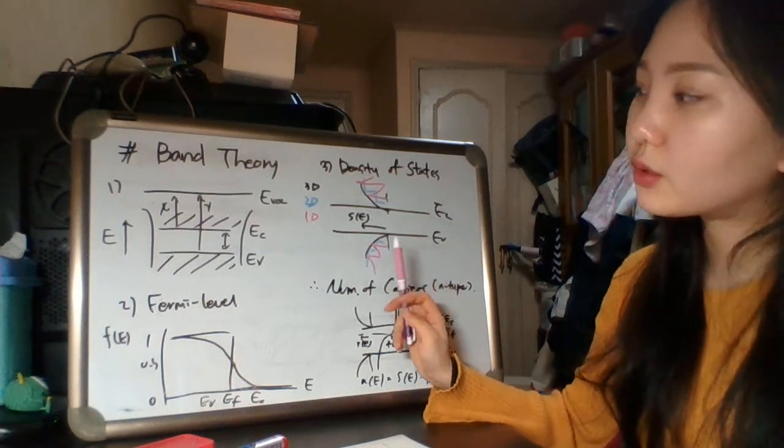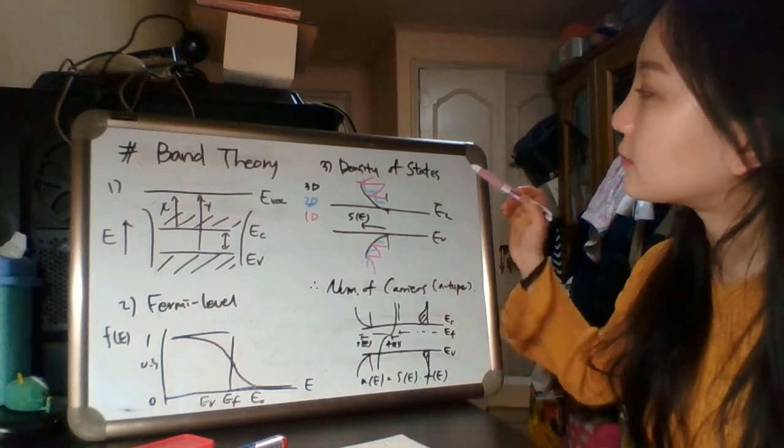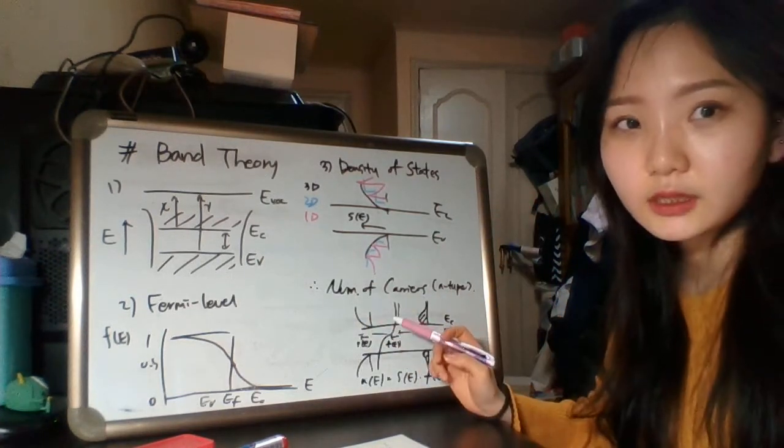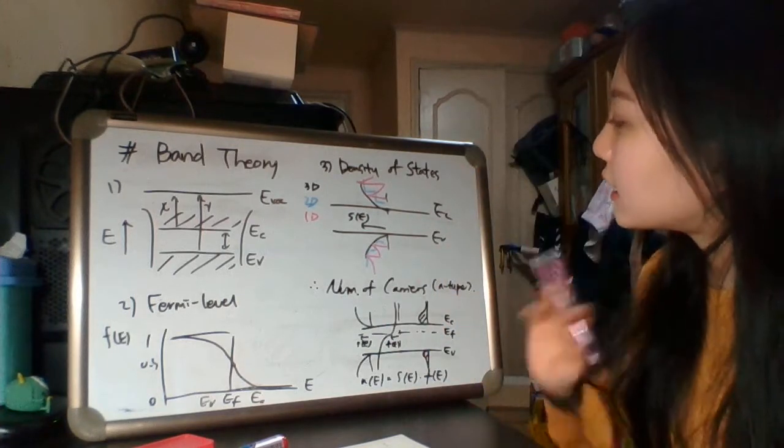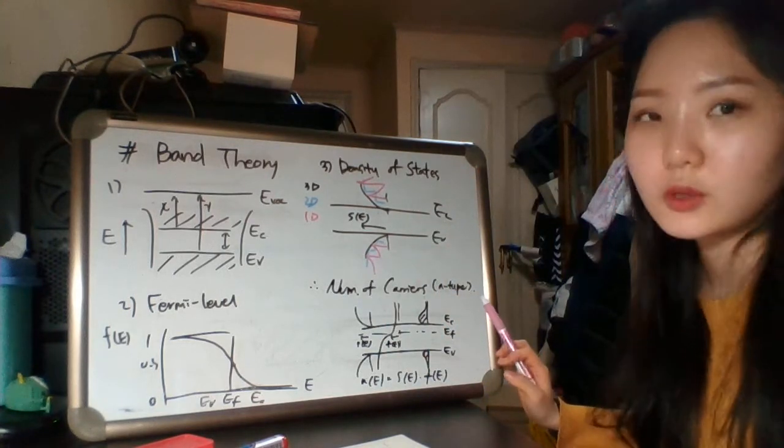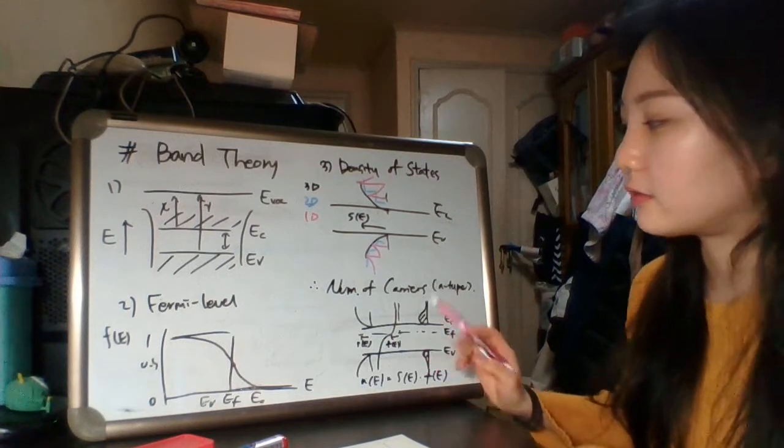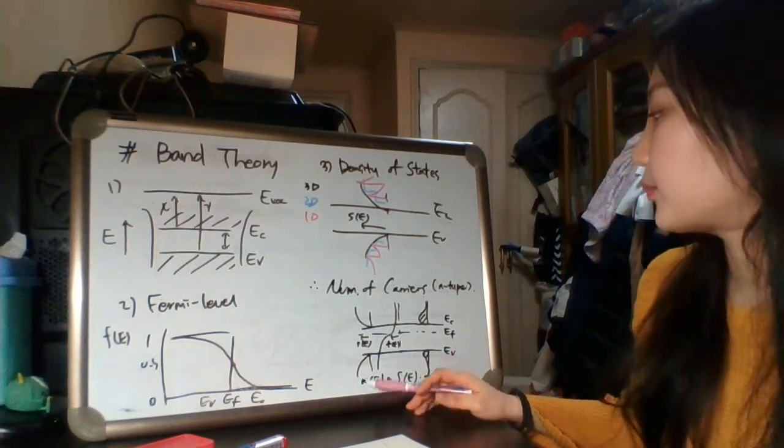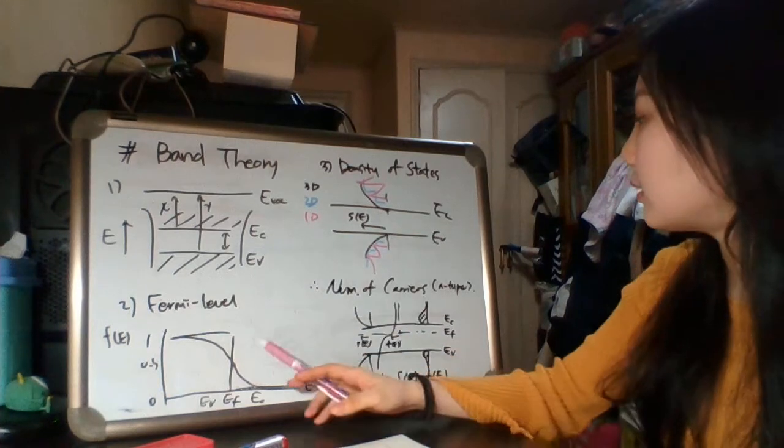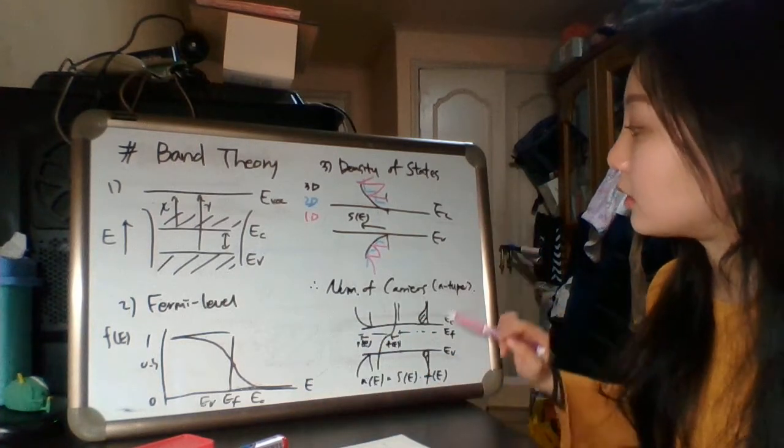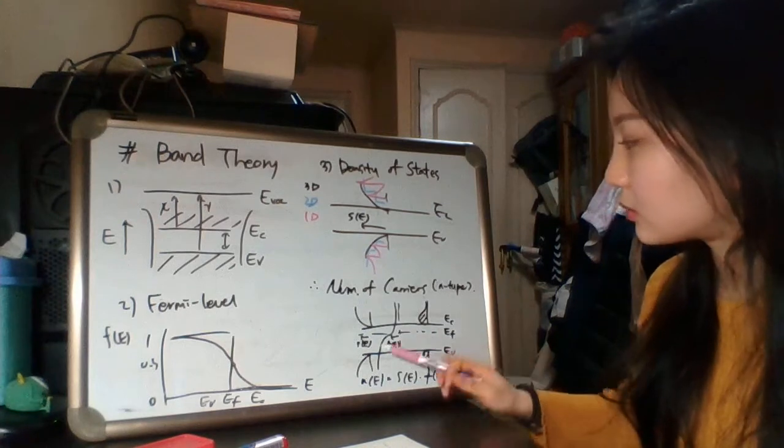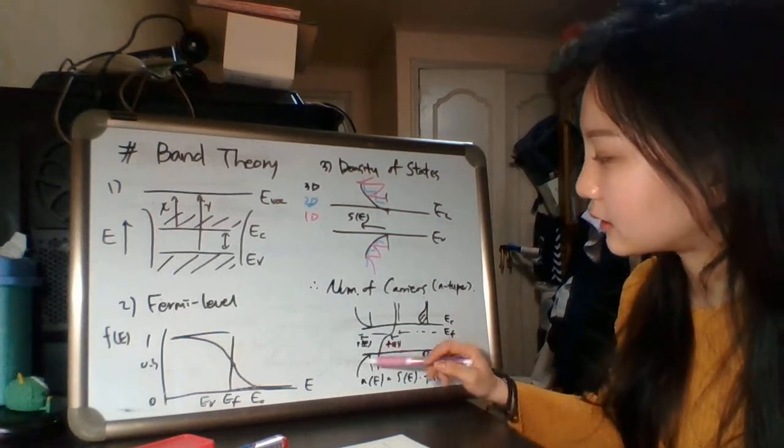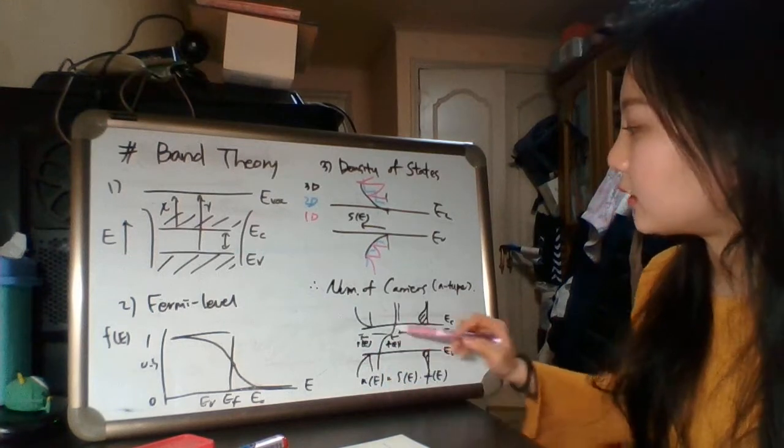So we know about Fermi level and density of states, so we can get the number of carriers. I draw N-type graphs. So in here we can get number of electrons. The equation is multiple of Fermi level and density of electron states. So this is density of electron states and Fermi level.